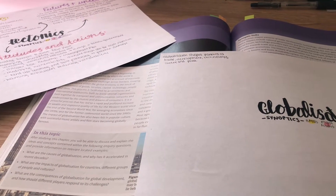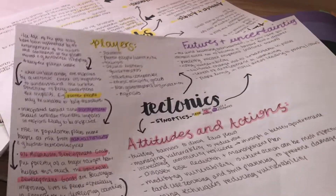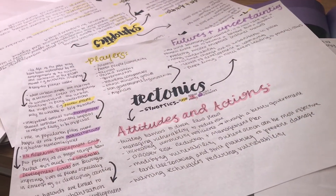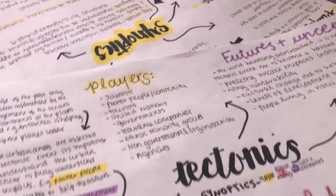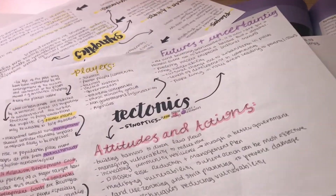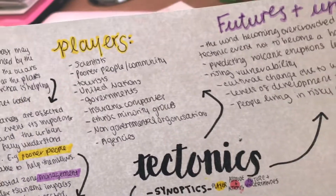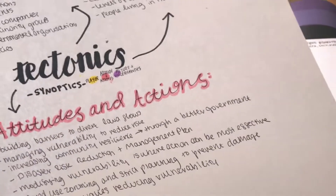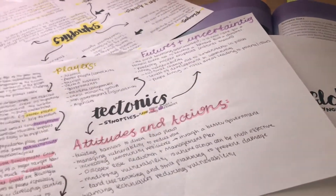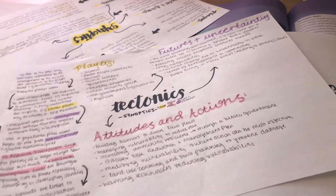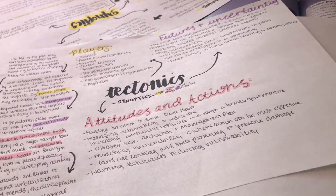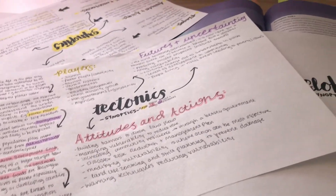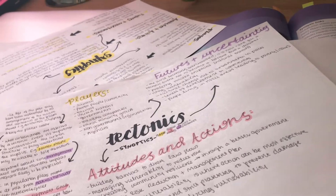Revision for this exam is so weird and so difficult. I've done these mind maps and I hope they're useful, but I'm also going to go through the spec and look at all the synoptic links — they give case studies to use, which I might even add onto these. I was really disappointed that I couldn't use all my knowledge of case studies in my real exam, so I'm hoping this is when they come in useful. It's a small paper, 70 marks, with five topics that could come up, so it's really hard to revise.